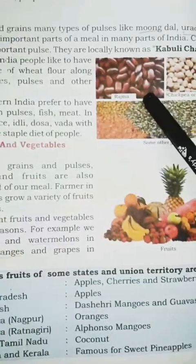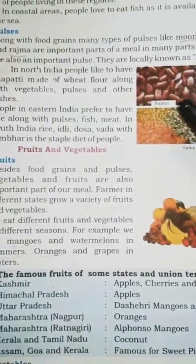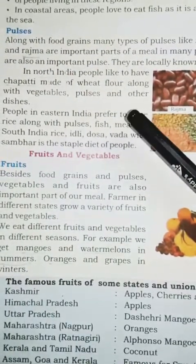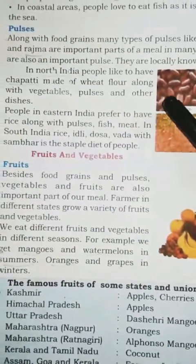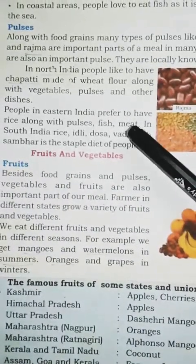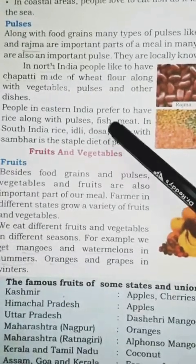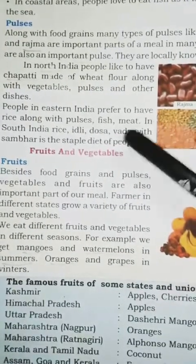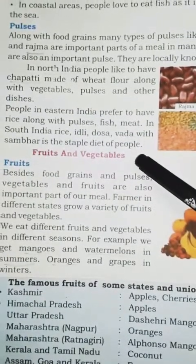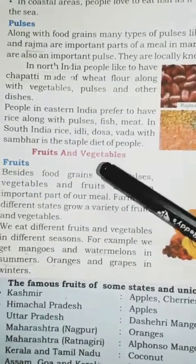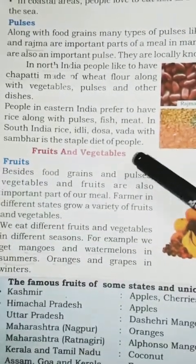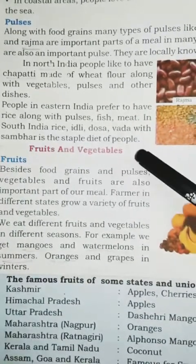Chickpeas are also an important part of a meal in India. They are locally known as Kabuli Chana. This is the picture of Kabuli Chana and this is Rajma. In North India, people like to have chapati made of wheat flour along with vegetables, pulses, and other dishes. In eastern India, people prefer rice along with pulses, fish, and meat. In South India, rice, idli, dosa, and vada with sambar is the staple diet.